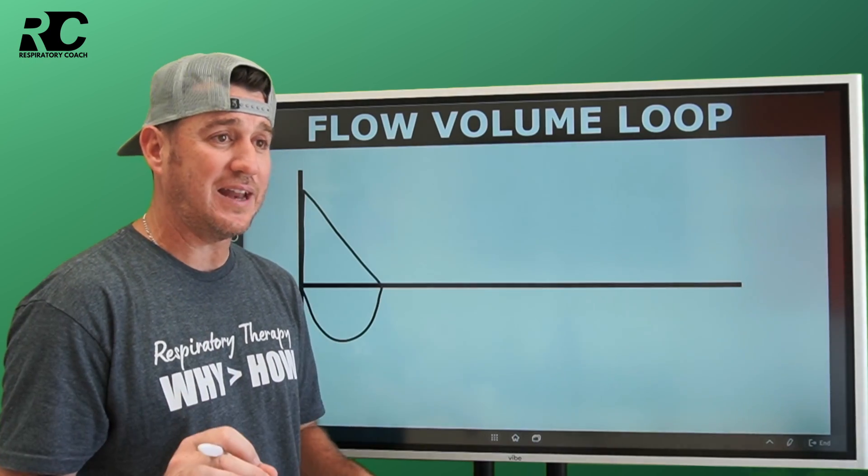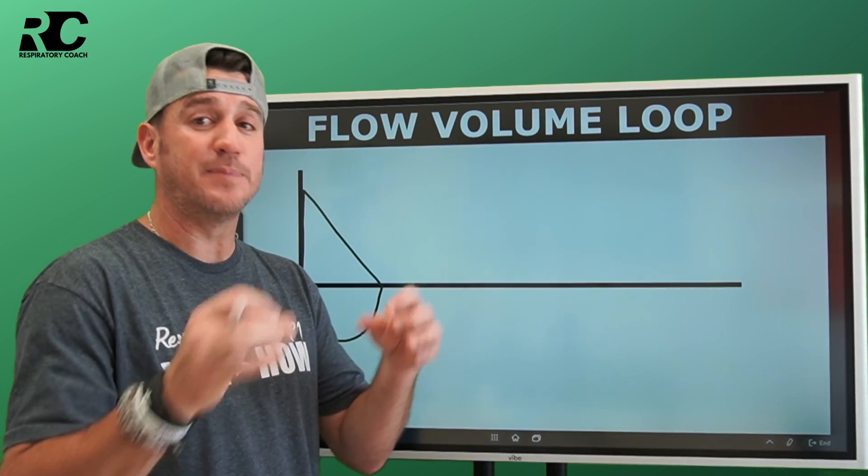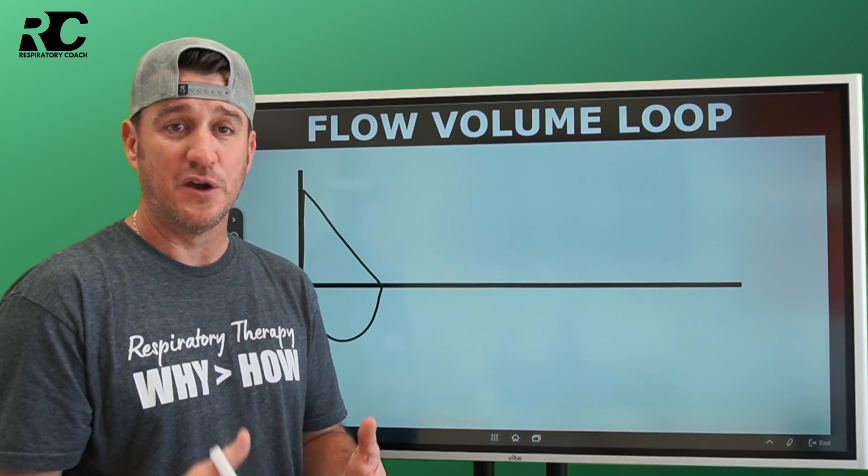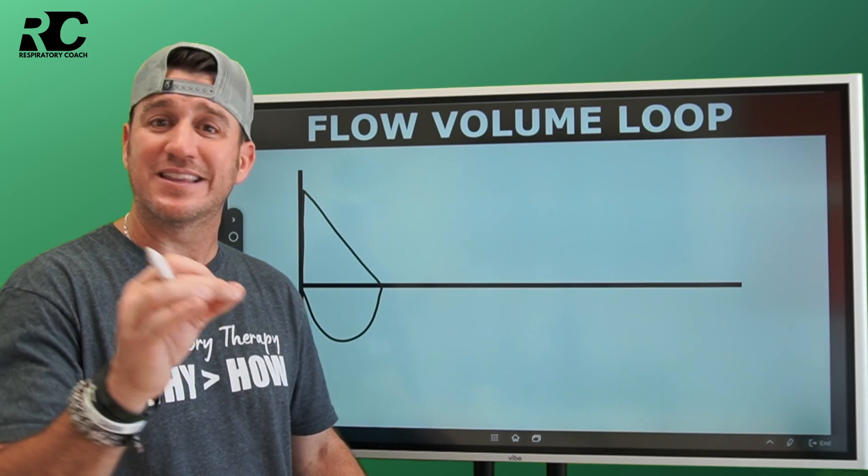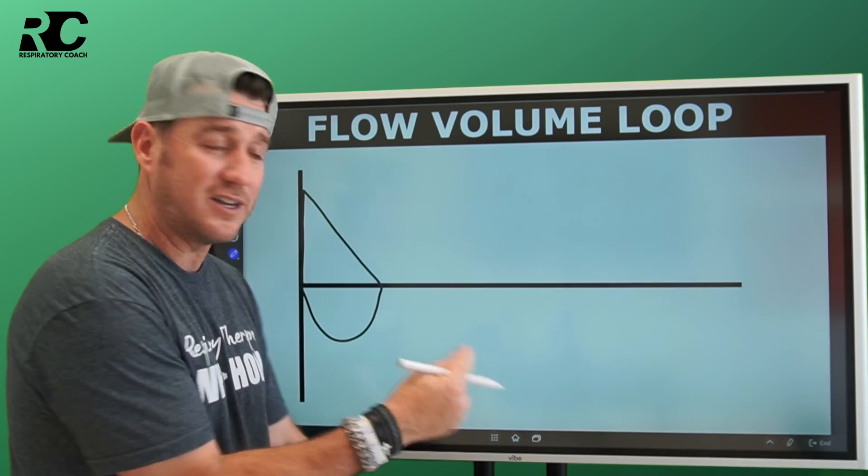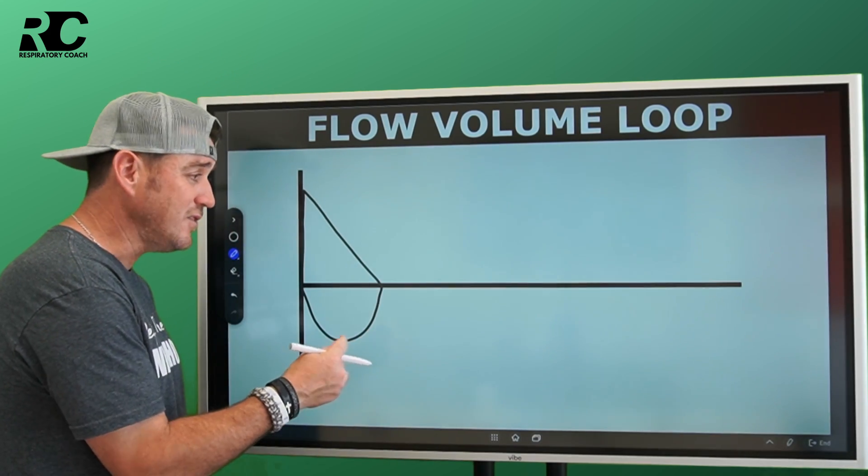When we have a patient who presents for pulmonary function testing, one of the most basic tests we're going to do is a spirometry exam. And when we do that spirometry, we're going to have them do an FVC, a forced vital capacity. That means we're going to ask them to breathe in as deep as they can and then blow it out as fast as they can. That is what a normal spirometry might look like.